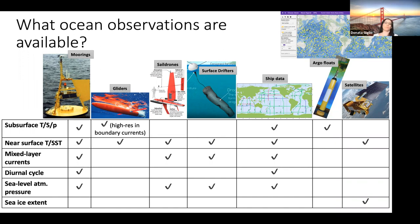We have gliders that are a key source of information for regions where we need high-resolution measurements; I mentioned earlier that boundary currents and gliders are very helpful for this. More recently, we have had saildrones, and these instruments are very useful, for instance, to supplement the information in regions where we have moorings and to provide information about the gradients between moorings.